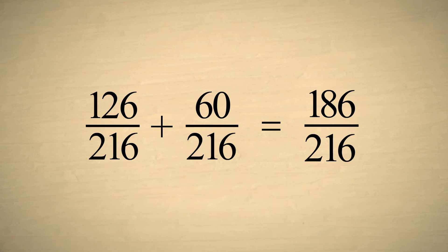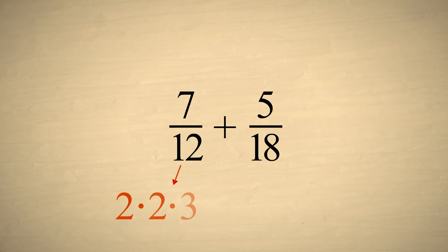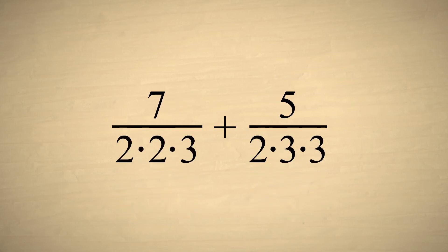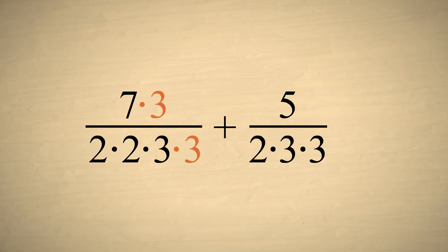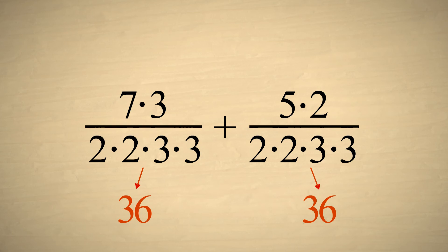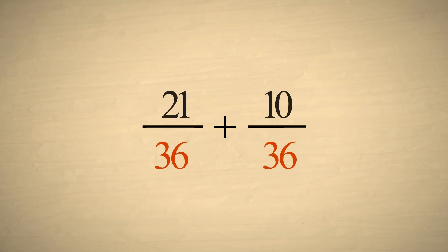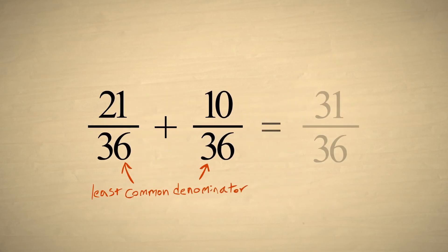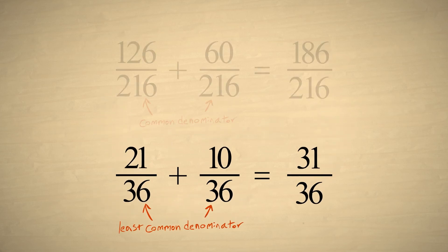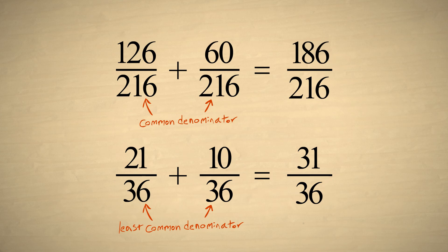Now let's try it again using the least common denominator. We'll start with the same fractions and factor the denominators. We can see that the first denominator only needs an additional factor of three, and the second denominator only needs an additional factor of two. So we end up with a much smaller common denominator of thirty-six, and a sum of thirty-one thirty-sixths, which is a lot simpler than the result we obtained by multiplying the two denominators.